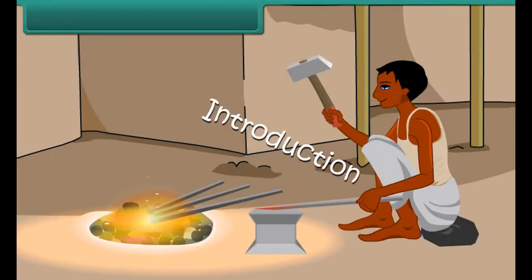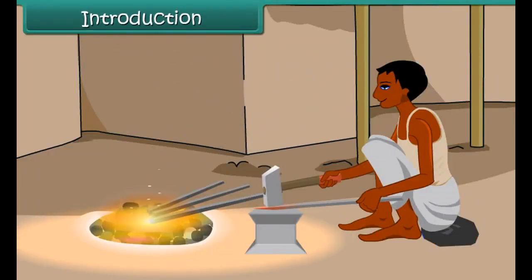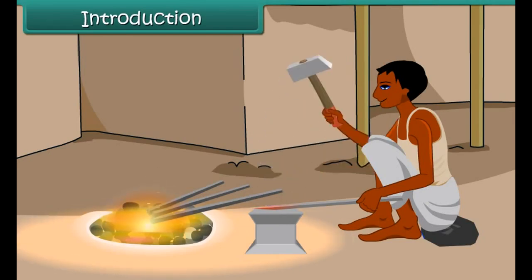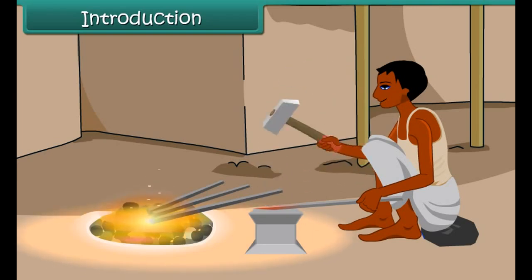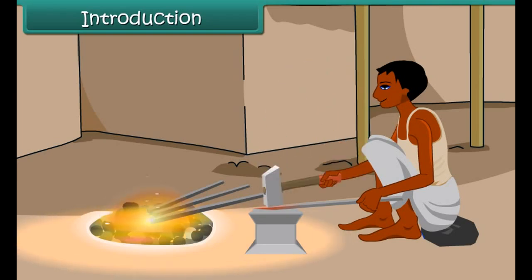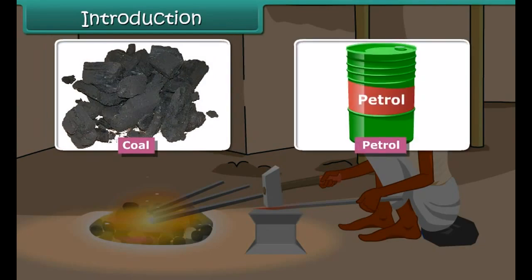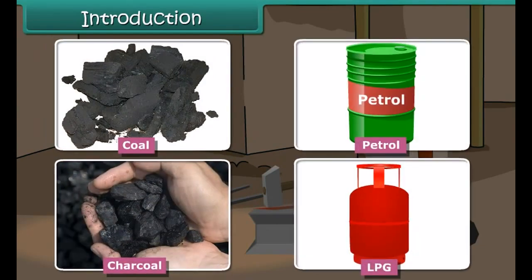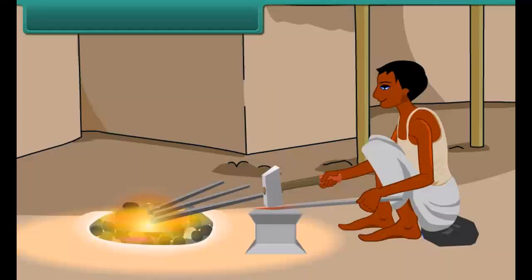The blacksmith burns coal to get hot iron, which can be beaten into a desired shape. A variety of fuels are used in daily life, such as coal, petrol, charcoal, and LPG. Do you know which chemical process takes place during the burning of these fuels? It is combustion. In this lesson, you will learn about combustion of fuels.